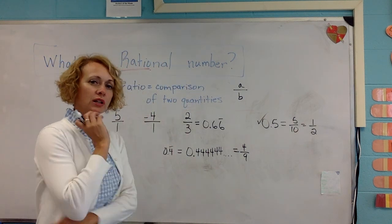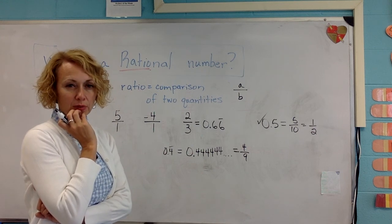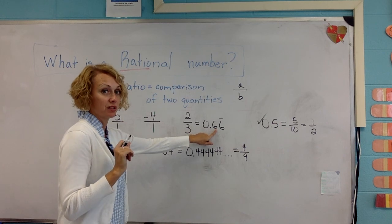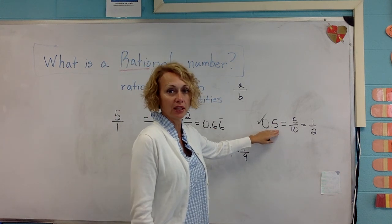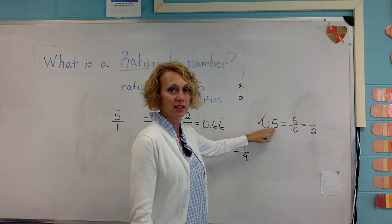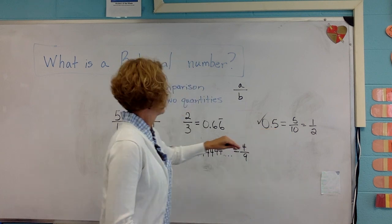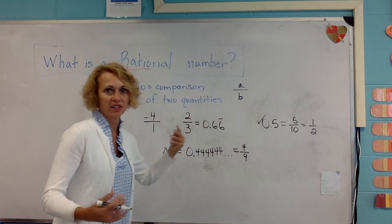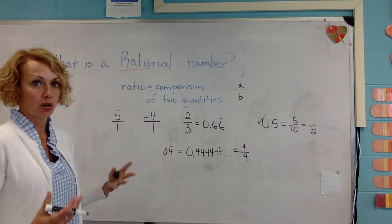All right now you're probably thinking well what kind of number would not be a rational number. Well one that doesn't repeat, a decimal that doesn't repeat or a decimal that doesn't terminate. This is a terminating decimal. It's ended. This one repeats. Well what in the world is an example of a decimal that goes on and on forever.